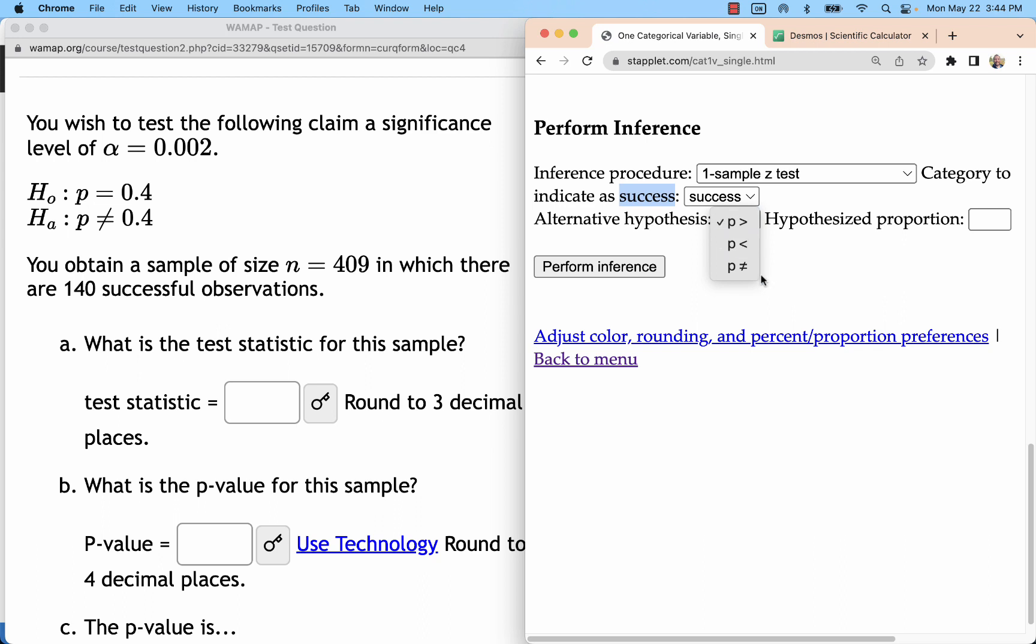And then, like before, we will set it to the not equal 0.4 to match up with the alternative hypothesis. Be very careful with how it's asking you to enter your information.